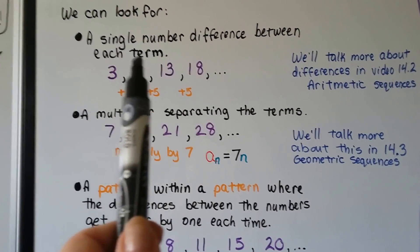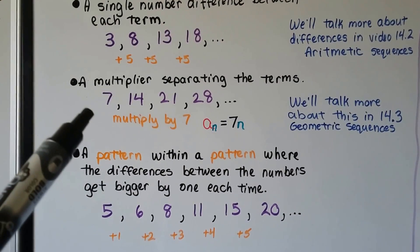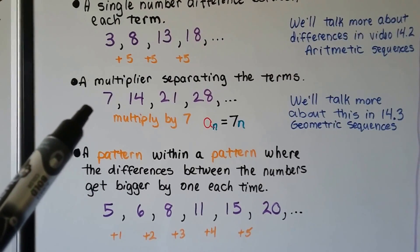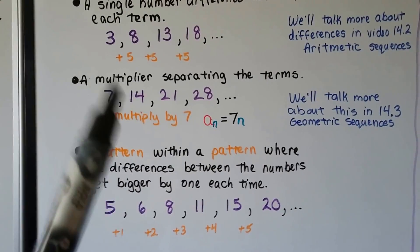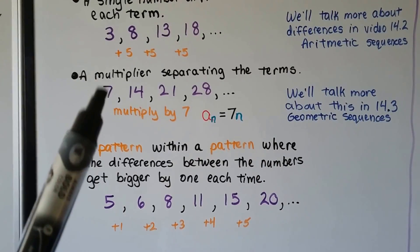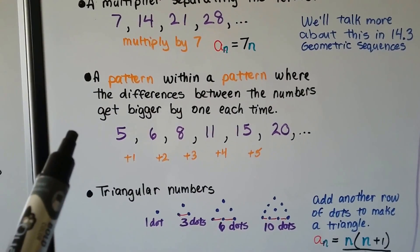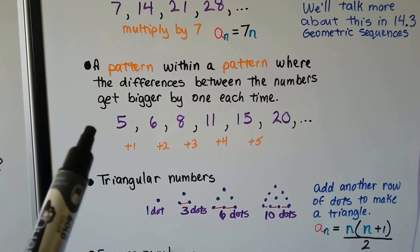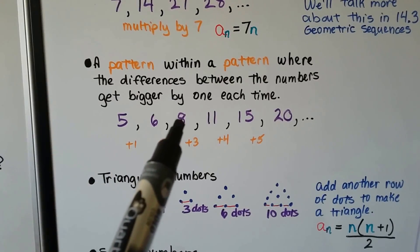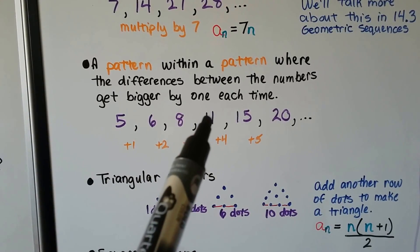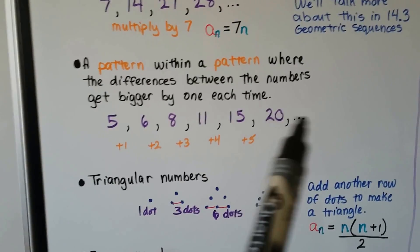That's arithmetic sequences — we'll get into that more. We could also look for a multiplier separating the terms. Here we have seven, fourteen, twenty-one, twenty-eight — they're all being multiplied by seven. We're going to talk more about this in lesson 14.3 about geometric sequences. There also could be a pattern within a pattern where the differences between the numbers get bigger by one each time: it got bigger by one so now it's six, bigger by two so now it's eight, bigger by three so now it's eleven, we add four it's fifteen, we add five it's twenty. So the next one we'd add six — it would be twenty-six.